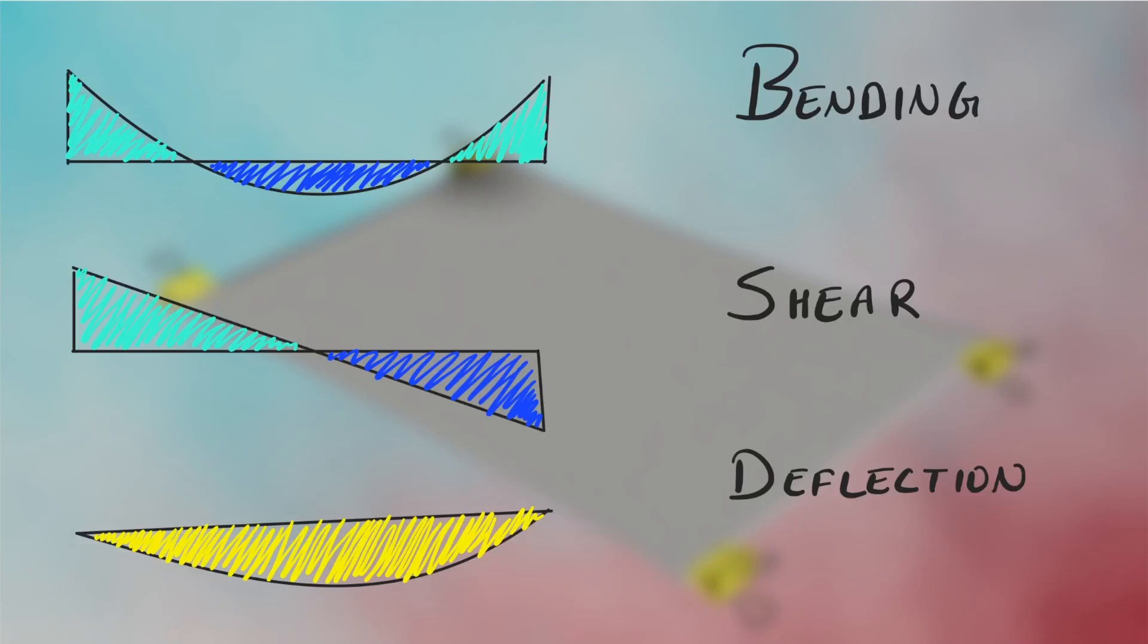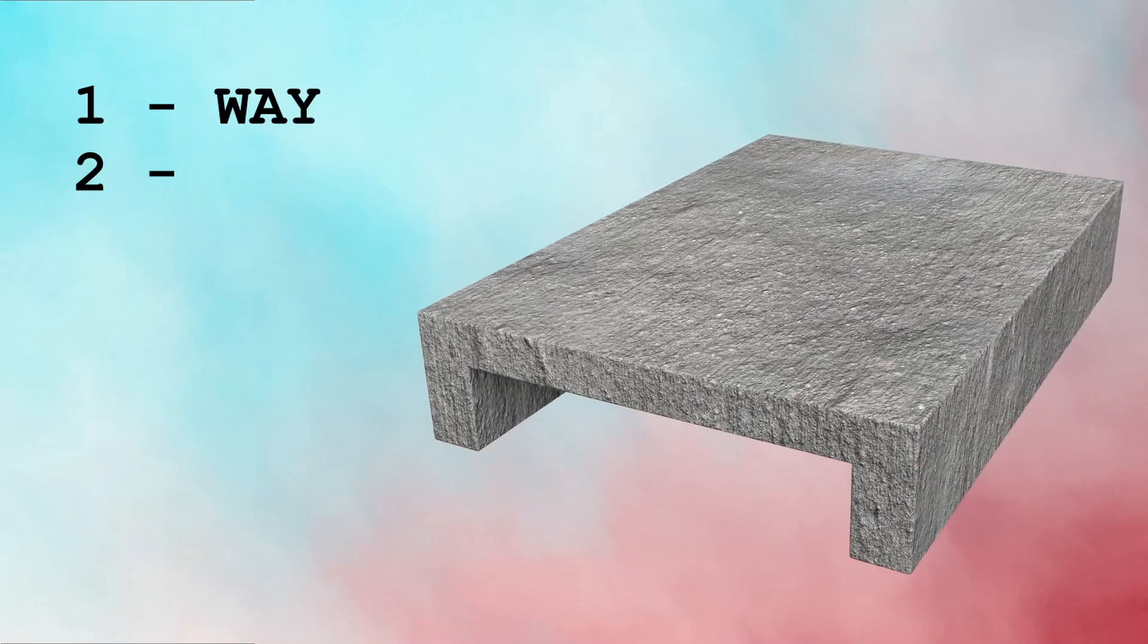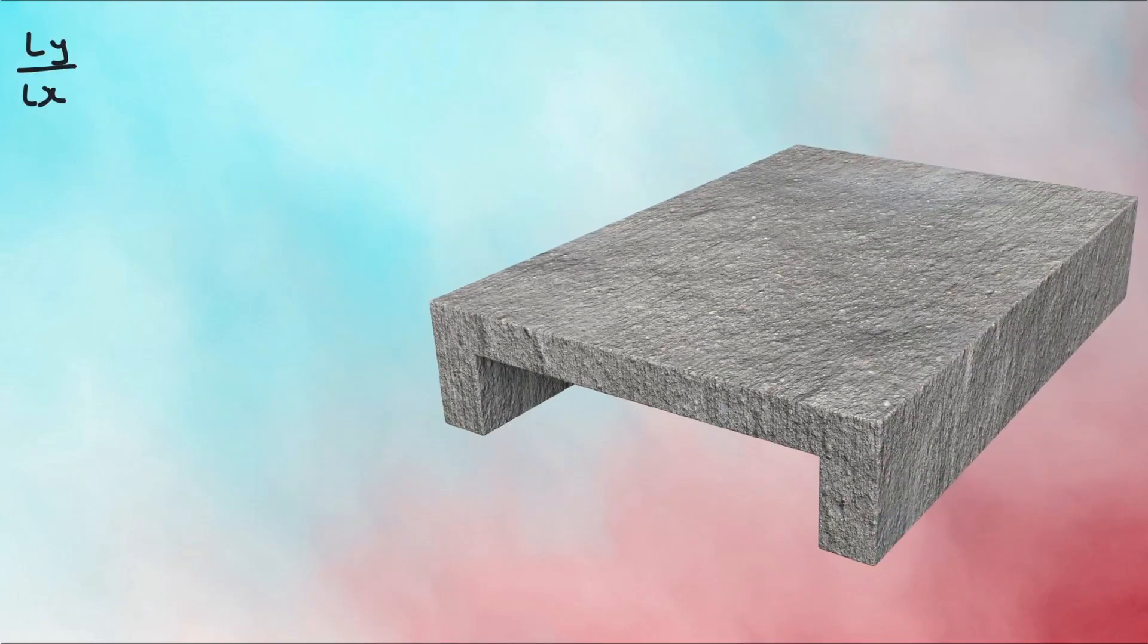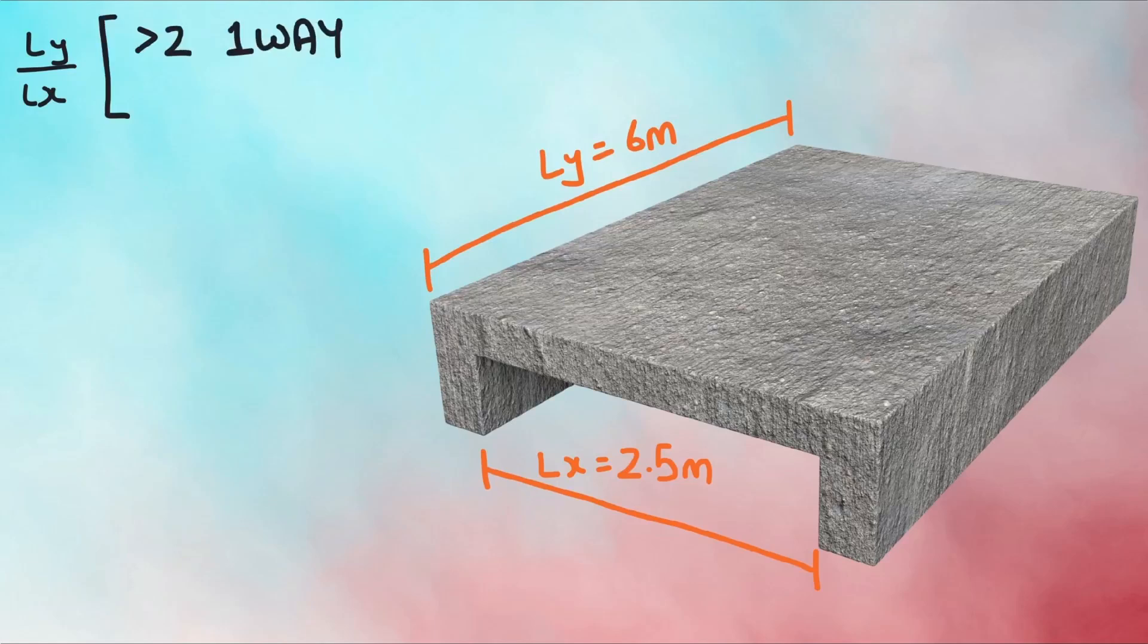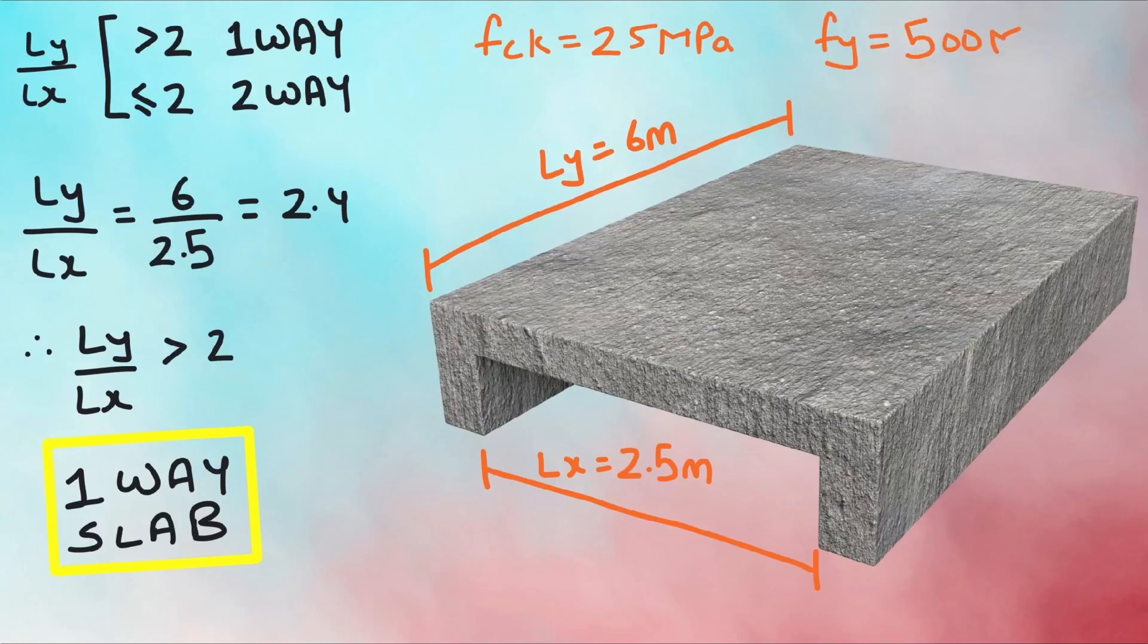Before designing for these failures, we have to calculate if a slab is one-way or two-way by taking the ratio of LY by LX. LY is the longer length and LX is the shorter length. If this ratio is greater than 2, it's a one-way slab. If it's less than or equal to 2, it's a two-way slab. In our case, the ratio is greater than 2, hence it's a one-way slab. Let's assume the grade of concrete equals 25 and grade of steel is 500.